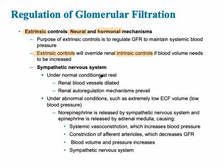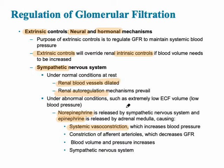Extrinsic control happens primarily via the sympathetic nervous system — the fight-or-flight system. The renal autoregulation prevails automatically. Norepinephrine and epinephrine, the two catecholamines, are released by the sympathetic nervous system, causing systemic vasoconstriction but vasodilation at the afferent arteriole. This decreases the GFR while blood volume and blood pressure increase via the neural mechanism.